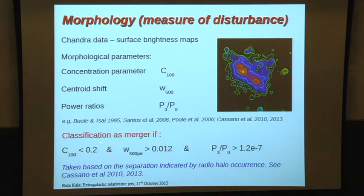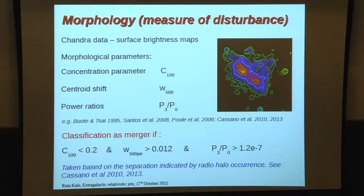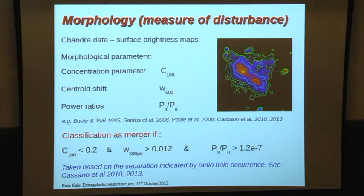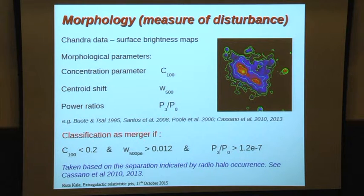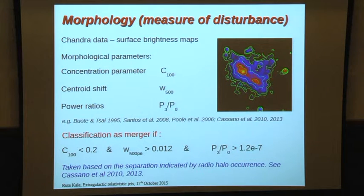The criteria we used: a smaller concentration parameter indicates a more diffusely spread-out ICM, suggesting disturbance, as opposed to a relaxed cluster with a highly centrally peaked X-ray profile. Similarly for the other two parameters. The limits we chose are motivated from the radio halo context, where radio halos are diffuse megaparsec-scale radio sources that occur typically in merging clusters. This allows us to separate the sample into merging and relaxed categories.